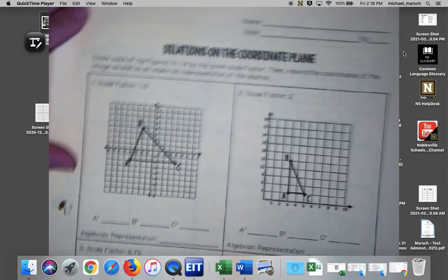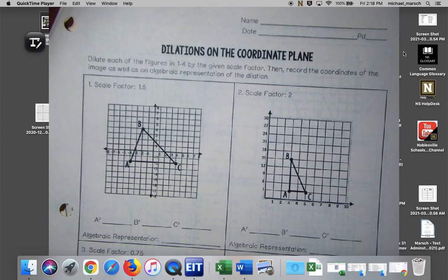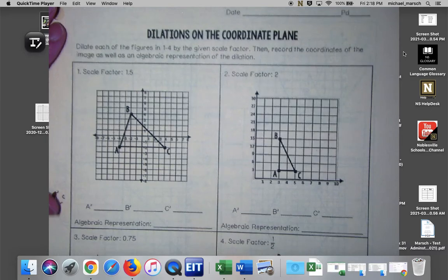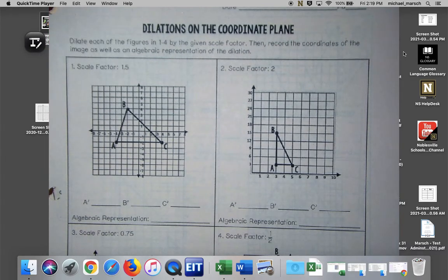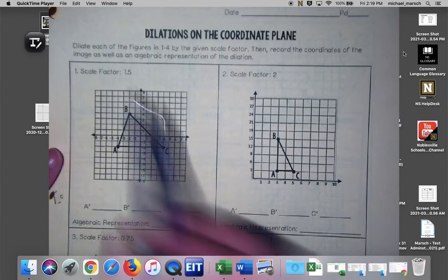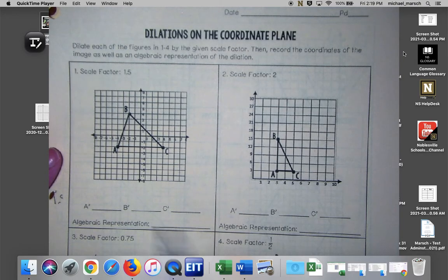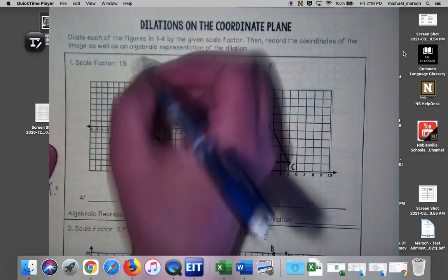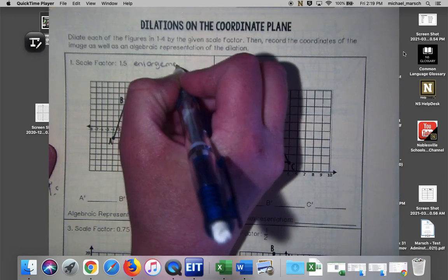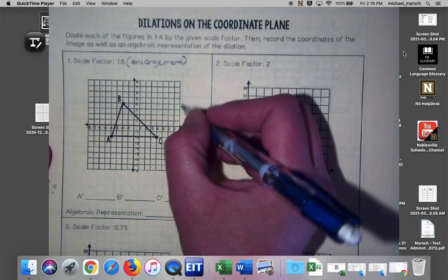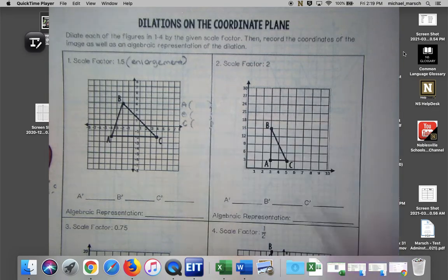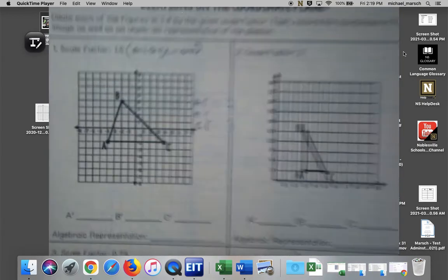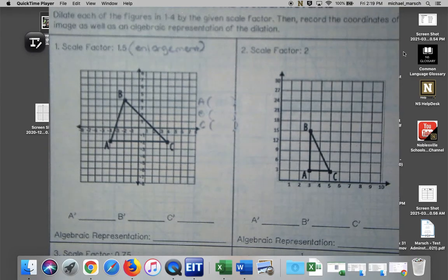Okay so this is a little bit different because we don't have side lengths, all we have are ordered pairs. So we're going to take what we've been doing for the side lengths and we're going to apply them to the ordered pairs. So it says dilate each of the figures by the given scale factor, then record the coordinates of the image and do an algebraic expression. We got this. So scale factor 1.5, is that going to be an enlargement or a reduction? Enlargement, because it's greater than one. And then what we need to do is first identify our pre-image coordinates. We can't do anything until we know what those pre-image values are. So go ahead and find the ordered pairs for A, B, and C on that triangle.